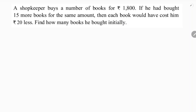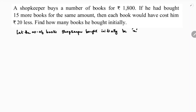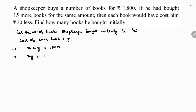Let the number of books the shopkeeper bought initially be x, and the cost of each book be y. The given condition is: number of books multiplied by cost of each book equals 1800, so xy = 1800. This is equation one.